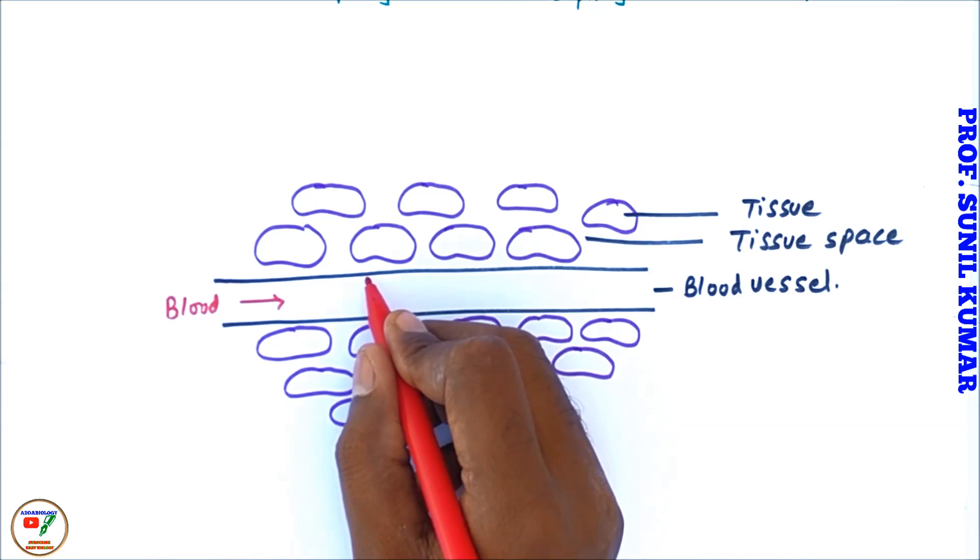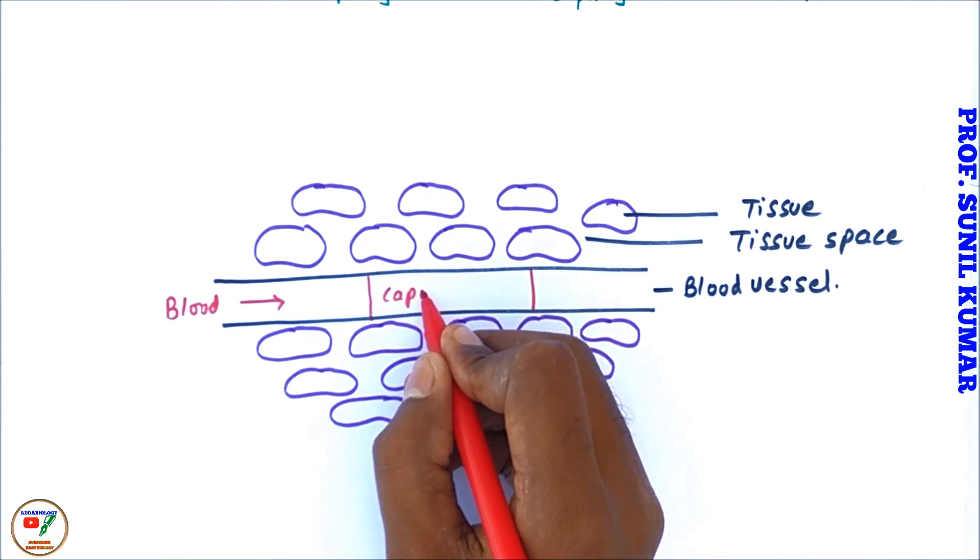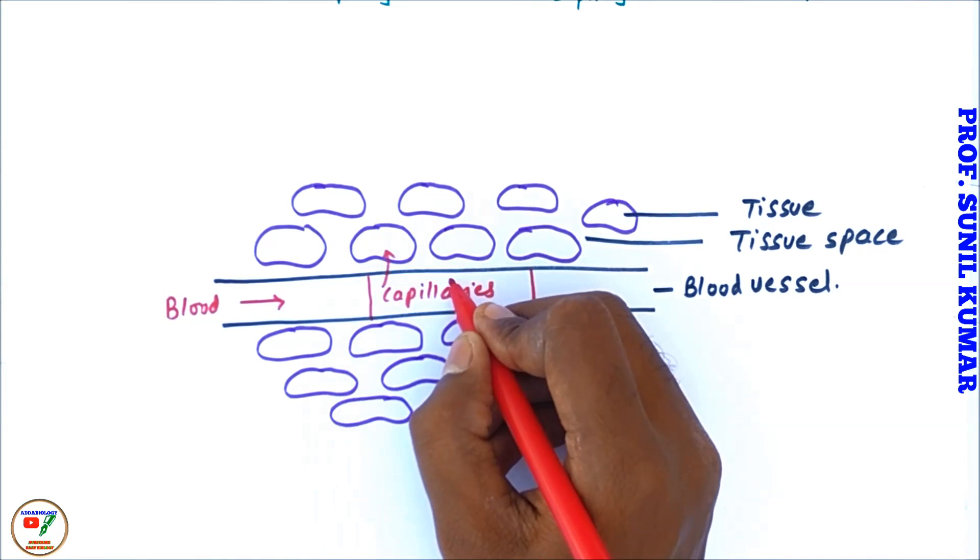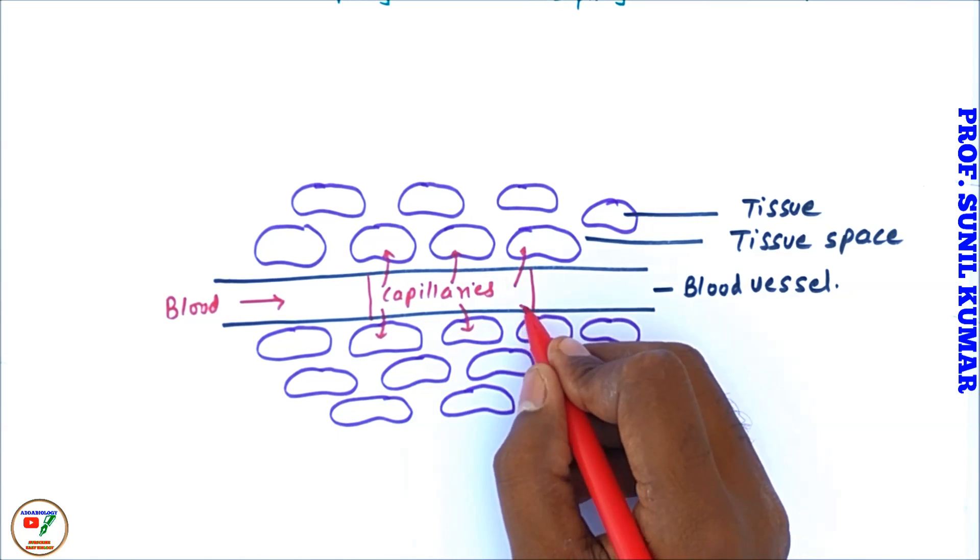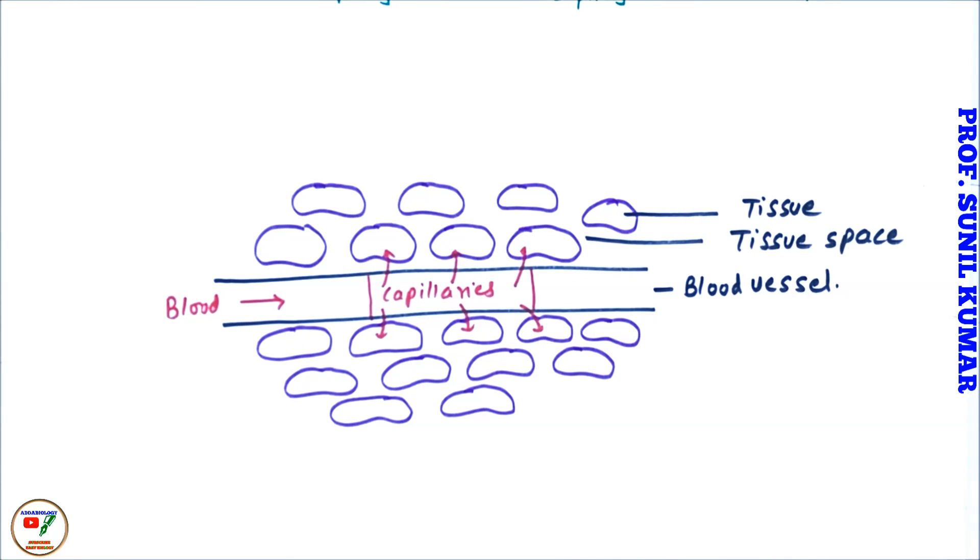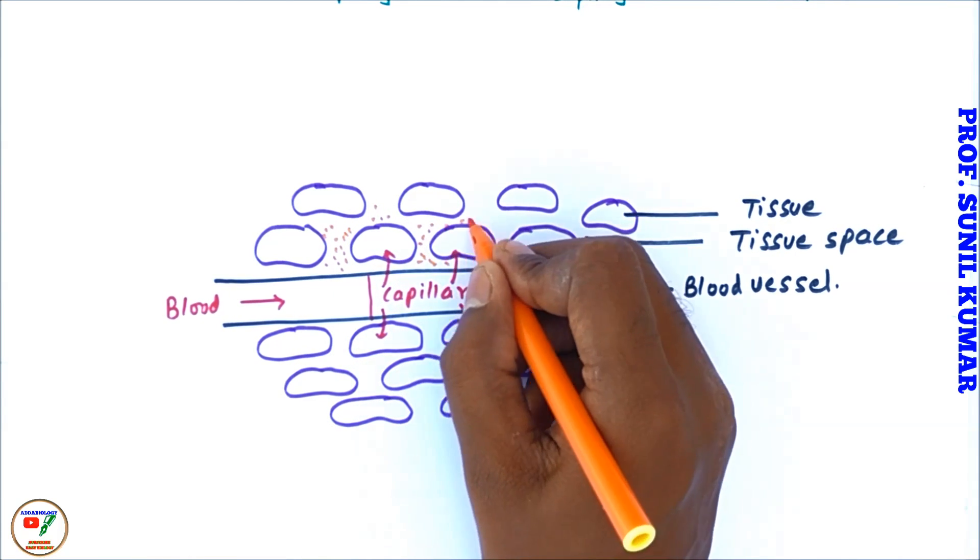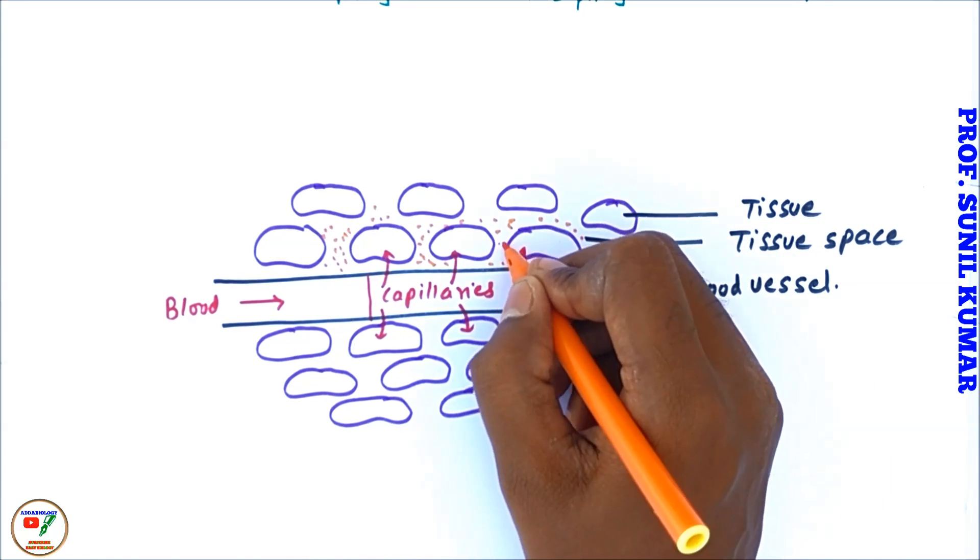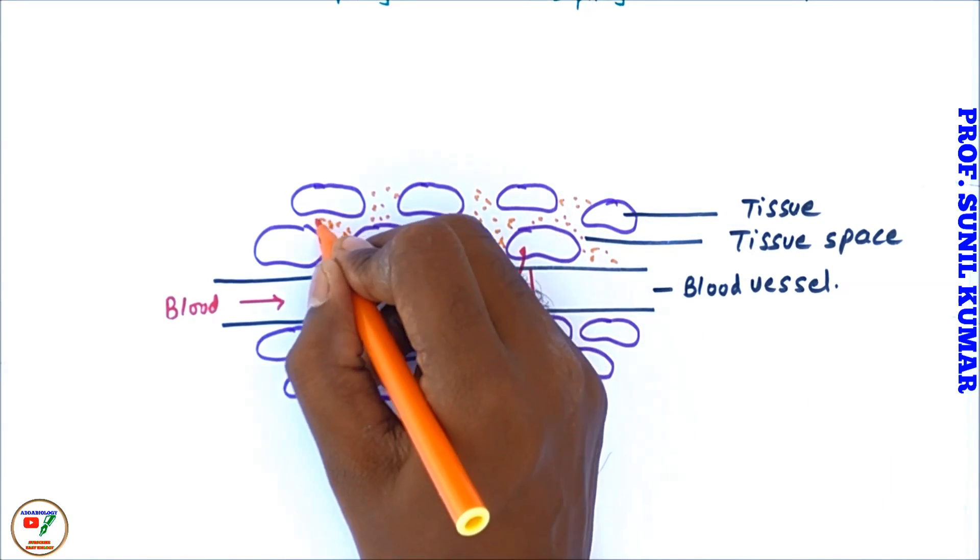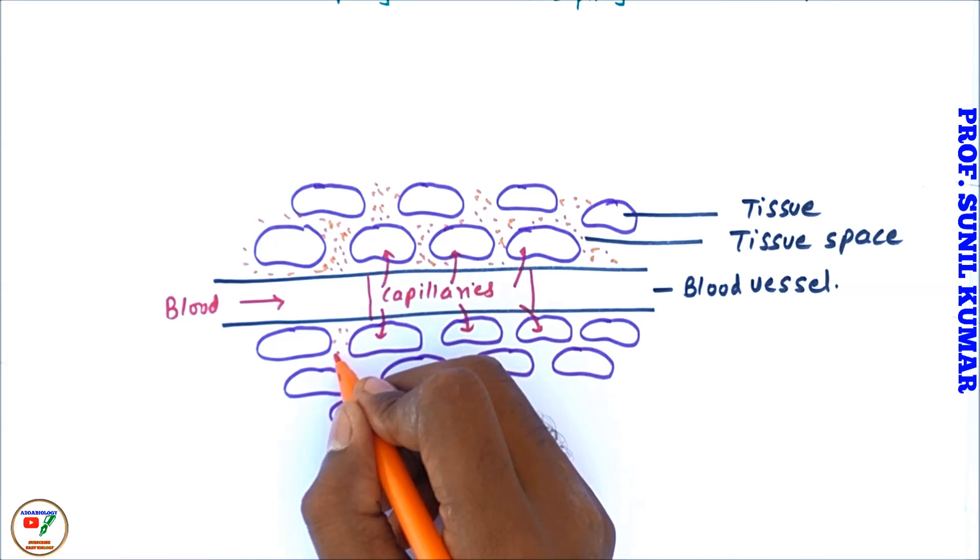So we need to understand that in between the tissues there are some space, that is tissue space. Now this is the blood which is going to enter or pass through this blood vessel. Exchange of blood in fact takes place through capillaries. So through capillaries, what happens: the oxygen is given to the cells and the tissues, but some part of the blood oozes out in between the tissue space.